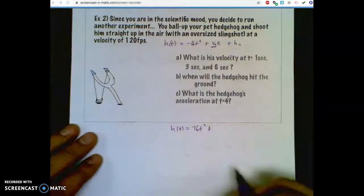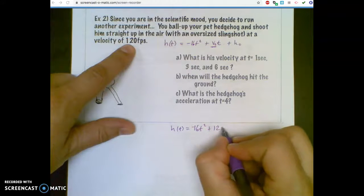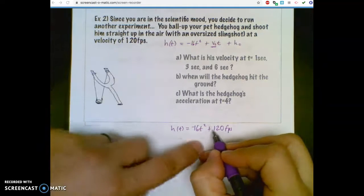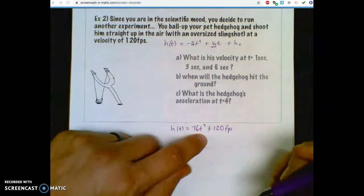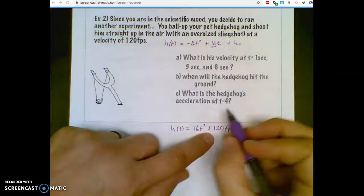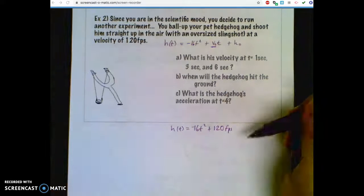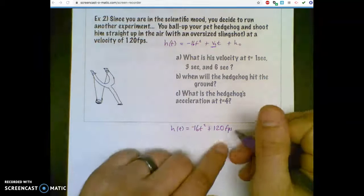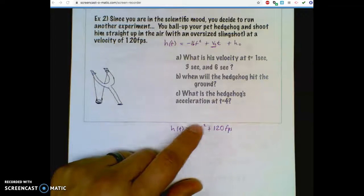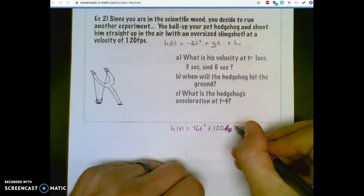So V0t is your initial velocity, and it says you shot upward at 120 feet per second. Now, if it would have said downward, like you were on top of the building, kind of like the cat, and you're feeling extra cruel and you shot a slingshot downward, you would have made that a negative. So because in our problem, up means positive, down means negative. And the reason that's negative, it's pulling down towards Earth, it's gravity's effect.